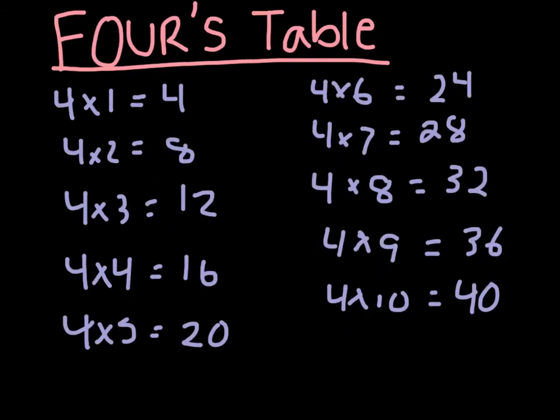Now let's go on to our fours table. It is: 4 times 1 is equal to 4, 4 times 2 is equal to 8, 4 times 3 is equal to 12, 4 times 4 is equal to 16, 4 times 5 is equal to 20, 4 times 6 is equal to 24, 4 times 7 is equal to 28, 4 times 8 is equal to 32, 4 times 9 is equal to 36, 4 times 10 is equal to 40.